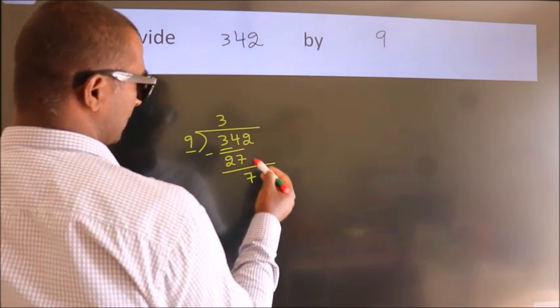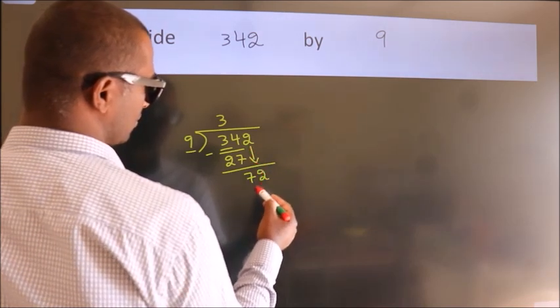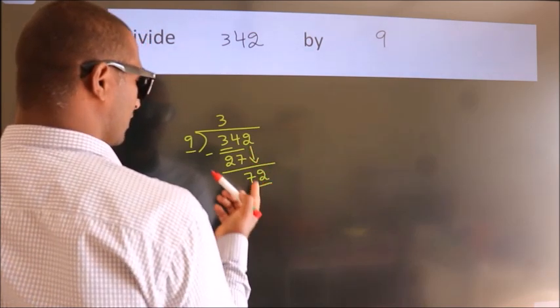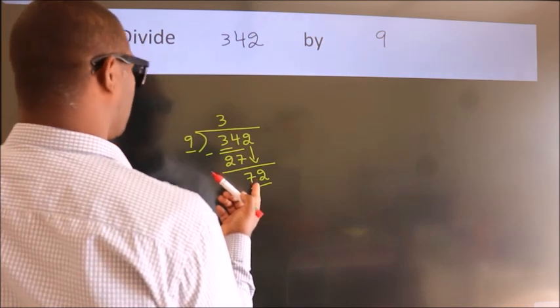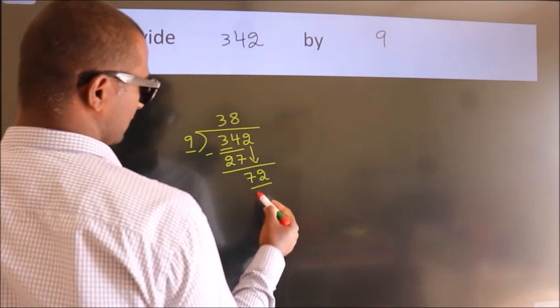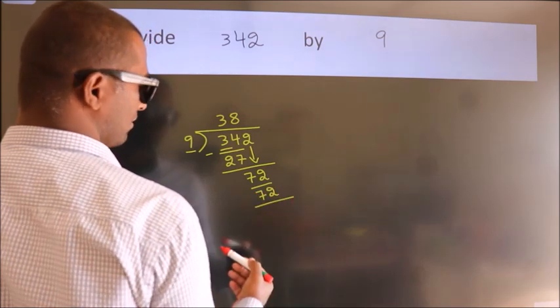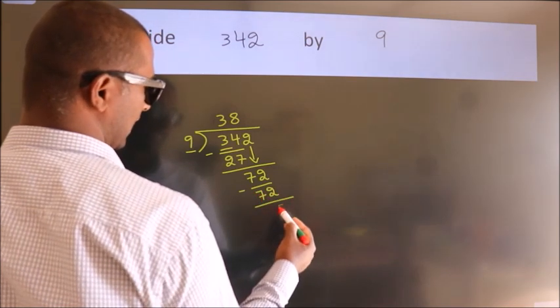After this, bring down the beside number. 2 down, so 72. When do we get 72 in the 9 table? 9 eights, 72. Now we subtract. We get 0.